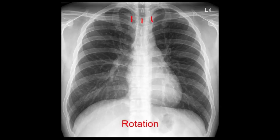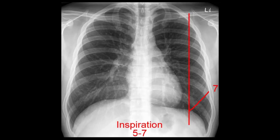Next, check for adequate inspiration by looking at the mid-clavicular line and seeing which anterior rib intersects the diaphragm at this point. It should normally be the 5th, 6th or 7th. More ribs means the lungs are hyperinflated, often seen in COPD. Less means that the patient may not have taken in a full breath when the x-ray was taken.